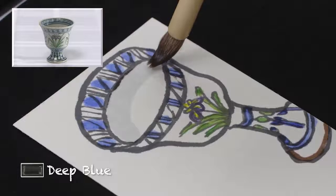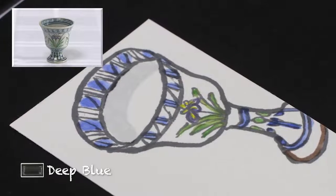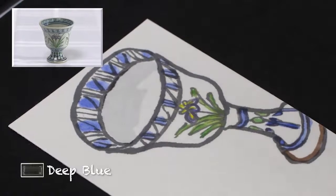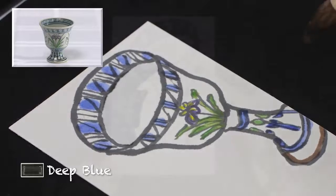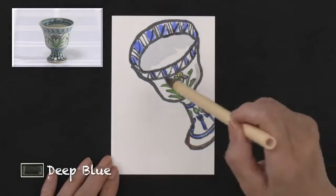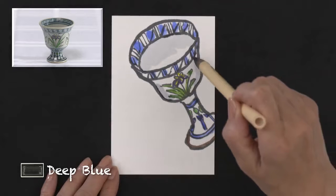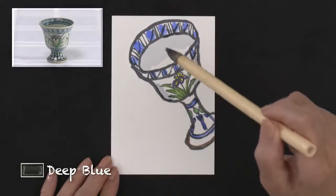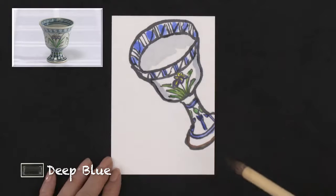In order to make the cup look round, move the brush sideways and paint the inside of the cup parallel to the rim. Dip the gradient brush in water and use the deep blue to color the whole cup.